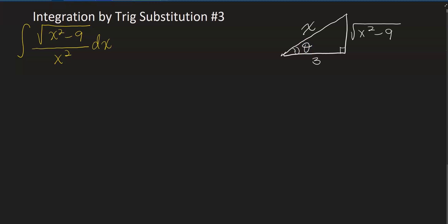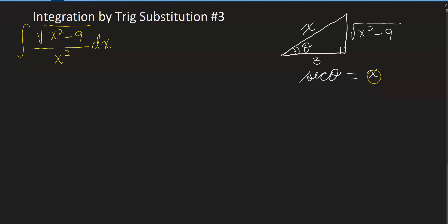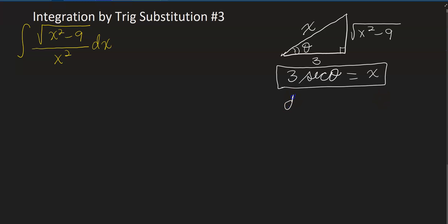Suppose you are looking at angle theta. With this angle, cosine of theta is 3 over x, which means secant of theta is x over 3, or we say x equals 3 secant theta. That is the substitution we are going to use in this case. Now if x is 3 secant theta, then dx comes from differentiating.